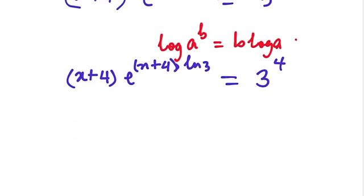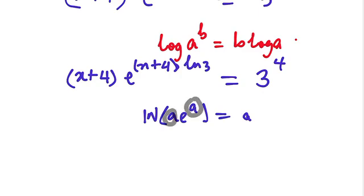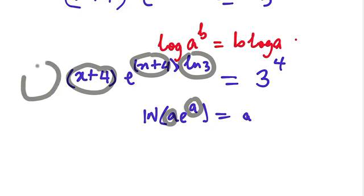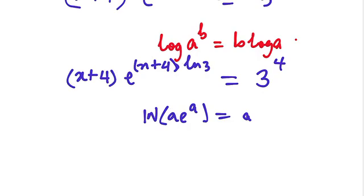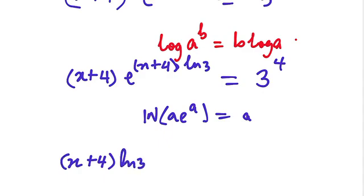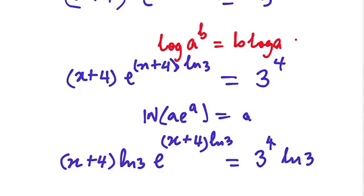So from there, we can see the Lambert W form needs both factors to match. We see that x plus 4 is here and x plus 4 is here, but ln of 3 is only on one side. So we are going to multiply ln of 3 to both sides of the equation. We're going to have x plus 4 times ln of 3, times e to the power of x plus 4 times ln of 3, equals 3 to the power of 4 times ln of 3.